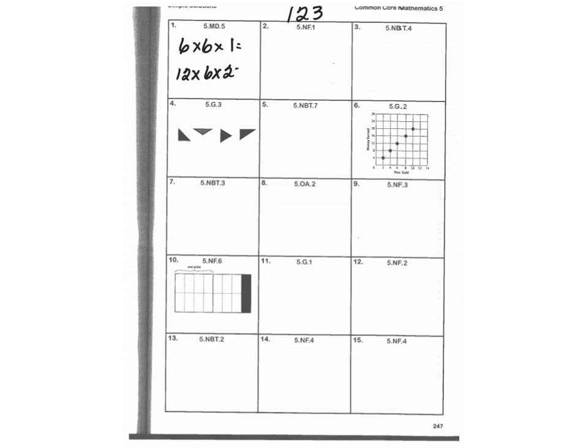I need to figure out the volume for each of those. 6 times 6 times 1 is 36. 6 times 2 is 12, 12 times 12 is 144. When I combine those two amounts, I get 180 cubic centimeters.